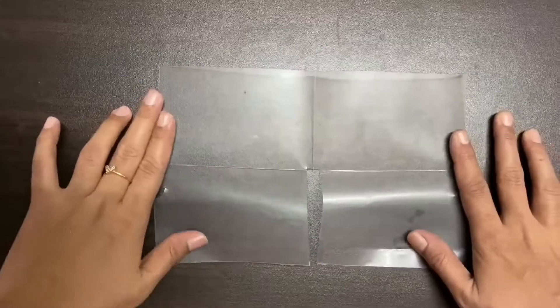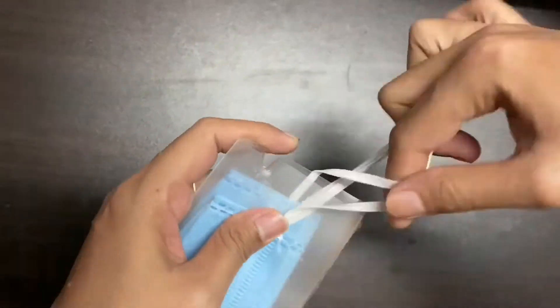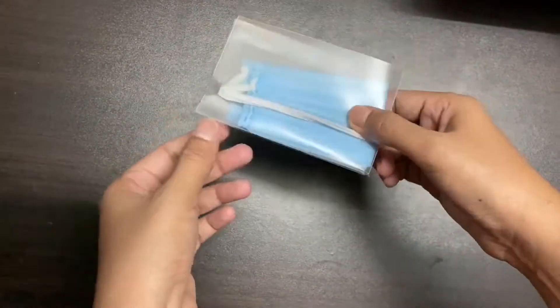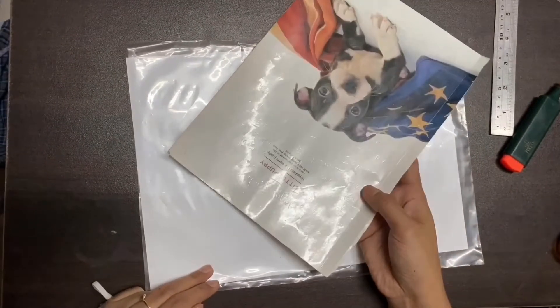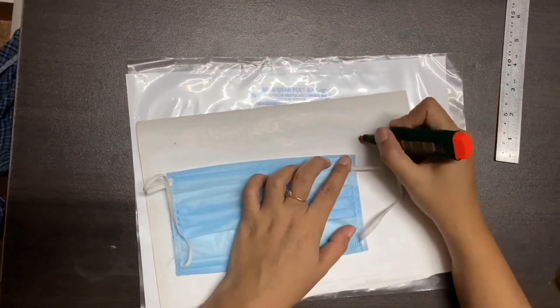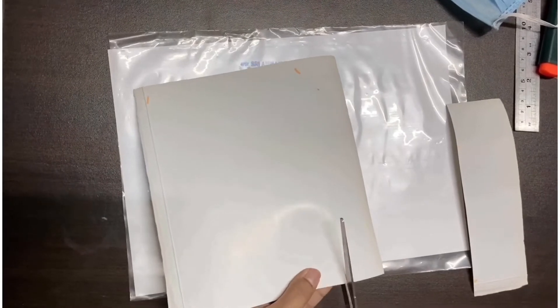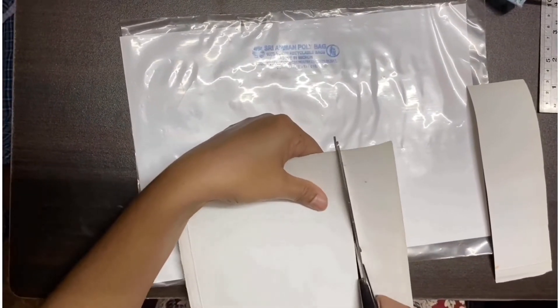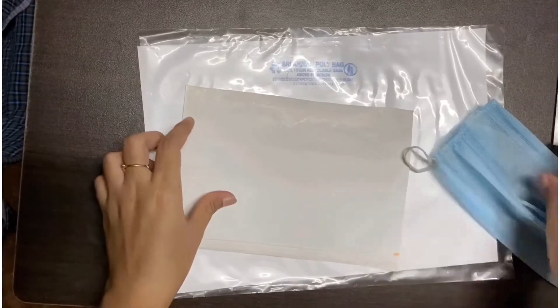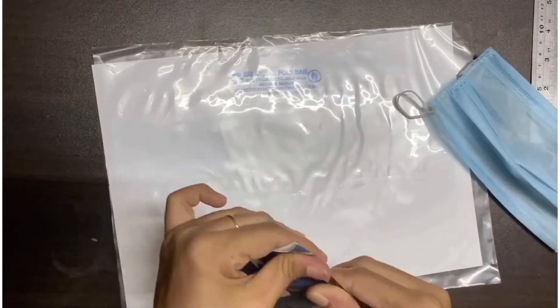Now we are ready to cut the pocket. We will cut a semi-circle shape. Now we are ready to cut the paper. We have to protect the mask and keep the mask clean.